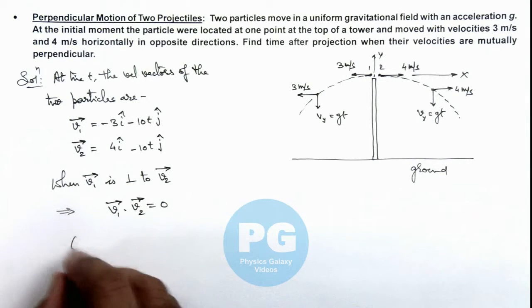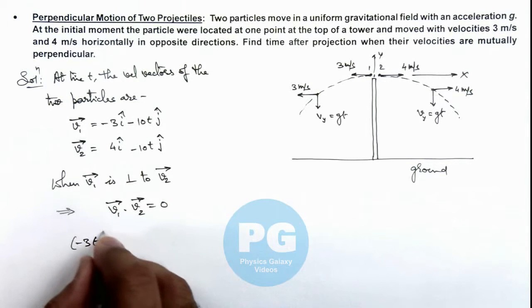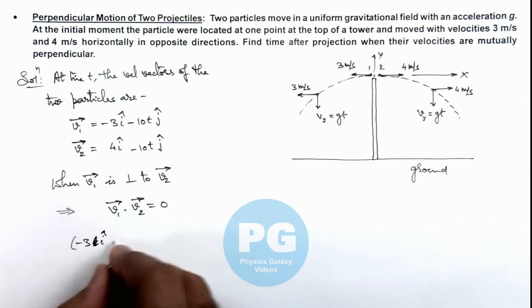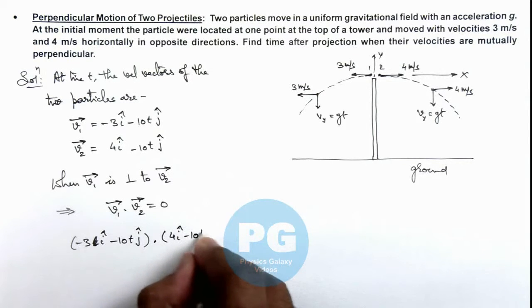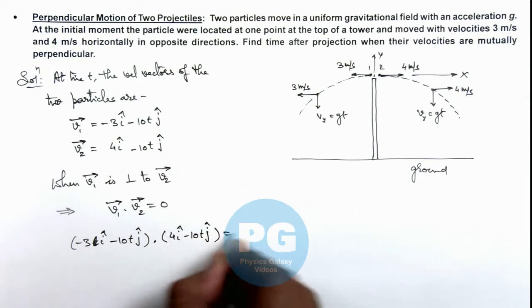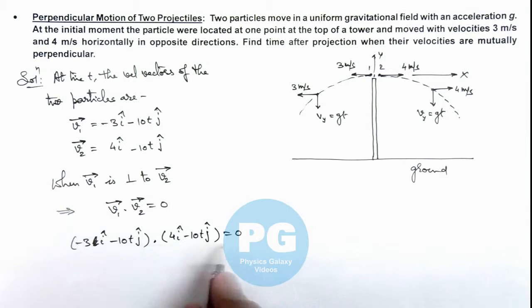So here if we take the dot product of minus 3 i cap minus 10t j cap, we take its dot product with 4 i cap minus 10t j cap, and if we equate it to zero, the result we are getting is minus 12 plus 100 t squared is equal to zero.